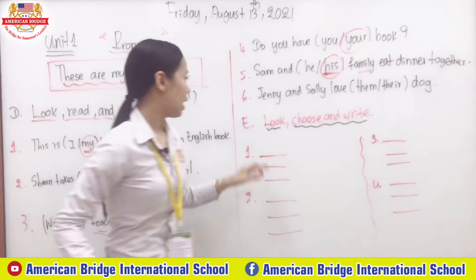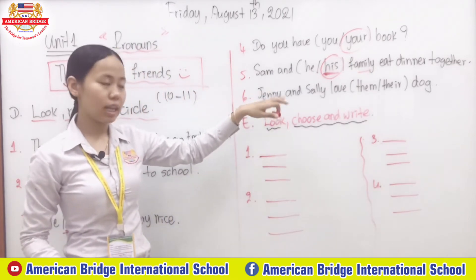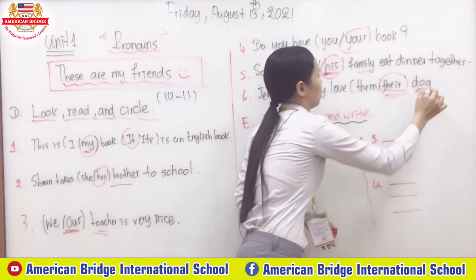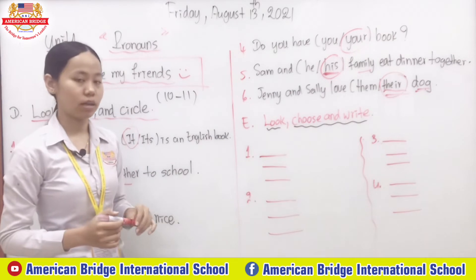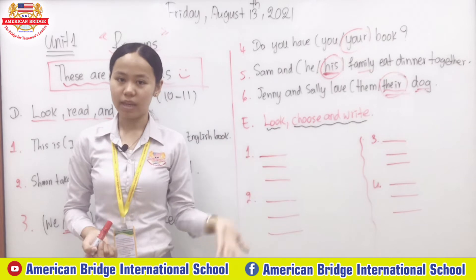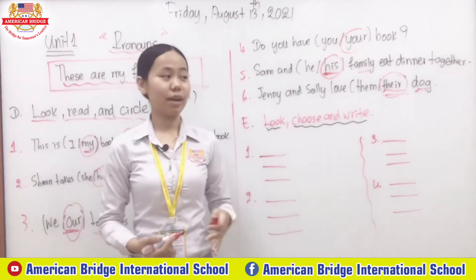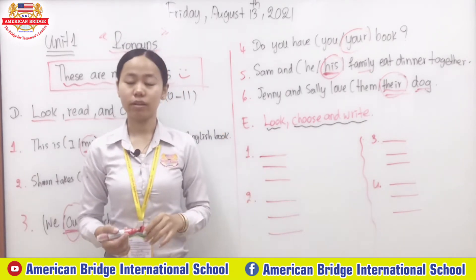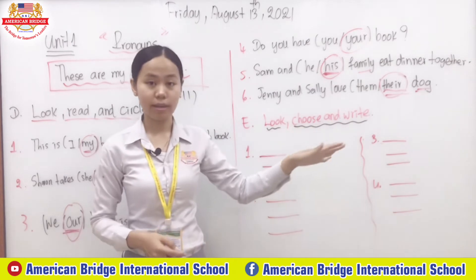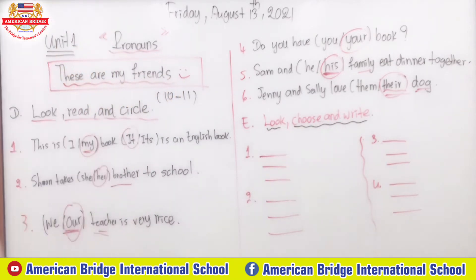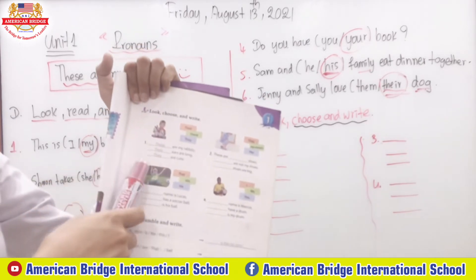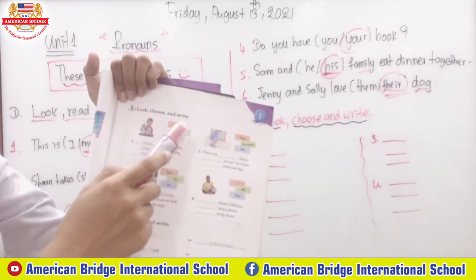Number six: Jenny and Sally love 'their' dog. We use possessive adjective 'their' to show who owns the dog. Now we have all the correct answers — check yours and then move on to Section E: 'Look, Choose, and Write.' Look at your book. They have already provided clues. For number one, choose from 'their,' 'this,' or 'they.'